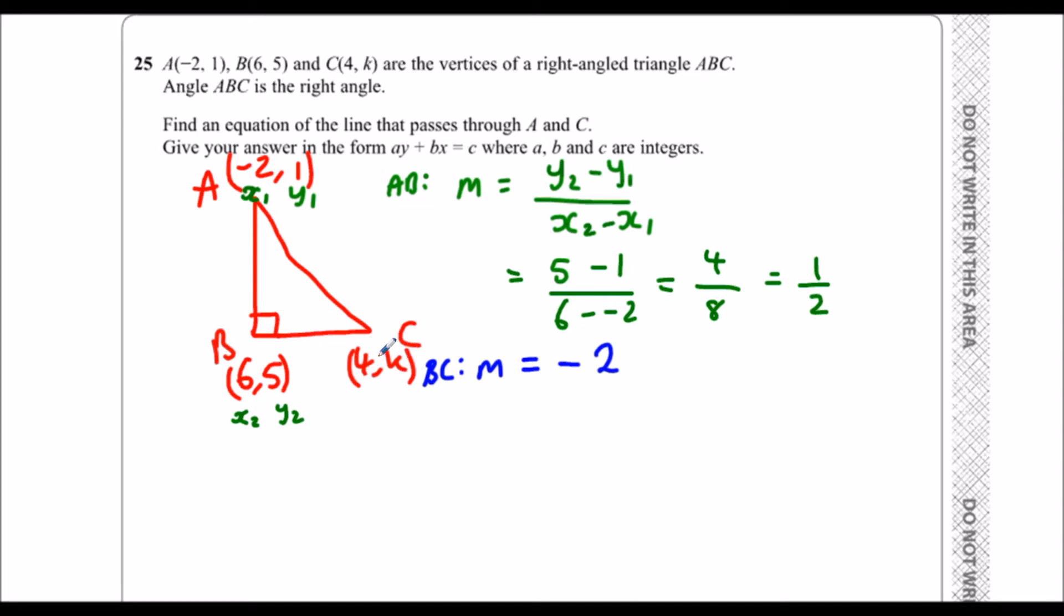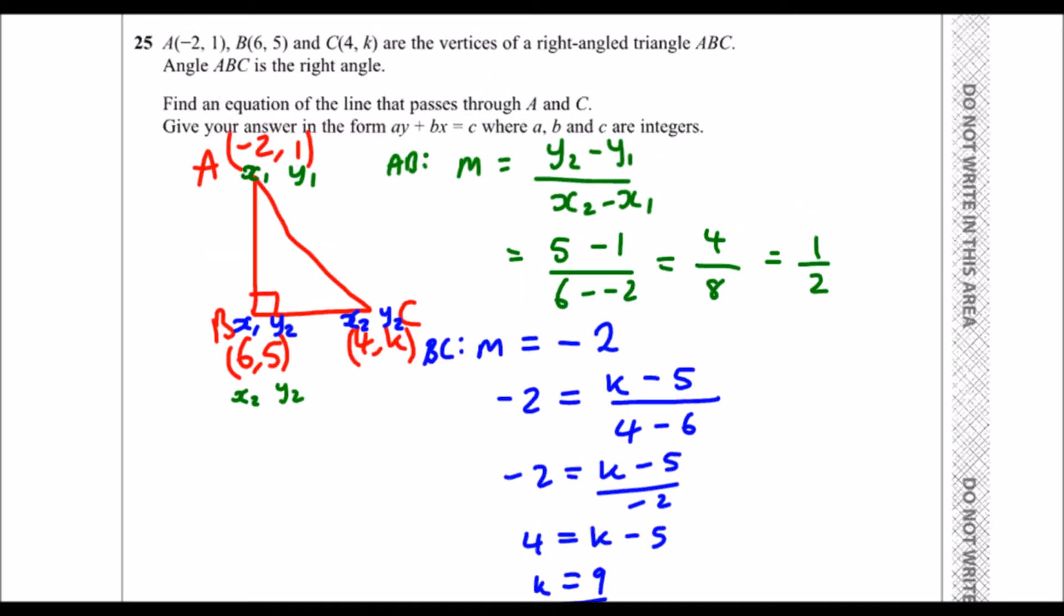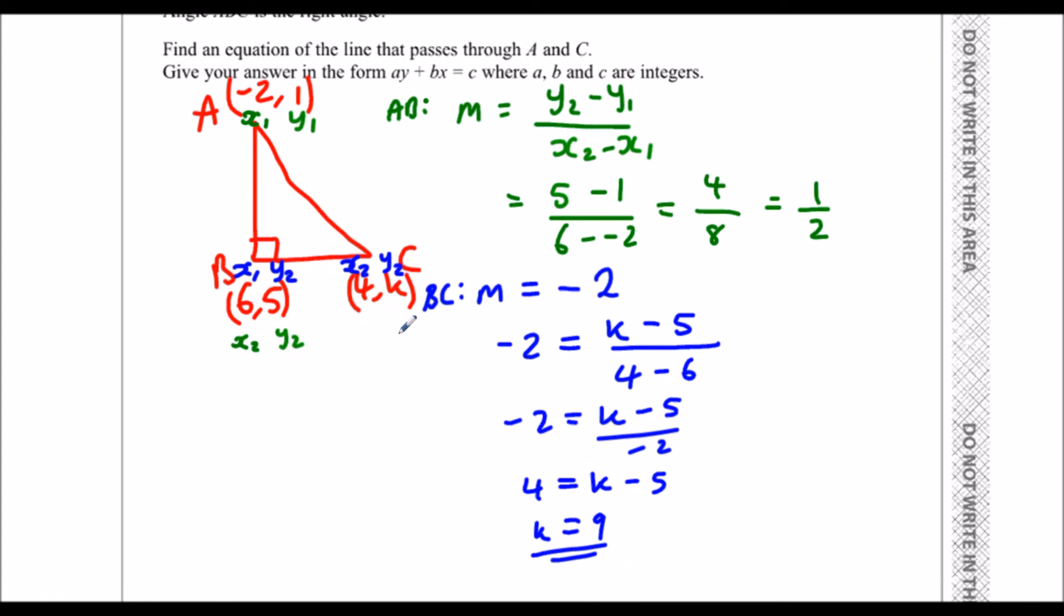Now we can work out this coordinate. We'll use the formula again. So there are a few ways we could have done it, but we'll use the formula again. So we'll just go X1, Y1, X2, Y2, and use the formula. So M, which is minus 2, is Y2 minus Y1 over X2 minus X1. So minus 2 is K minus 5 over 4 minus 6. So to get rid of a divide by minus 2, we multiply by minus 2. Multiply both sides by minus 2, which gives me minus 2 times minus 2, which is a positive 4. So 4 equals K minus 5. So K must be 9. So what do we have now? We know that this coordinate is actually 4, 9.